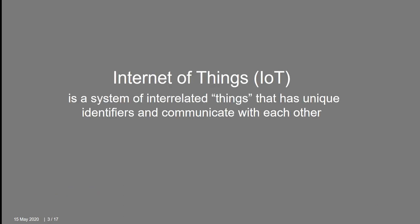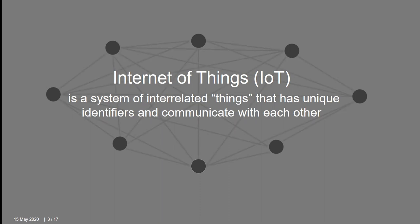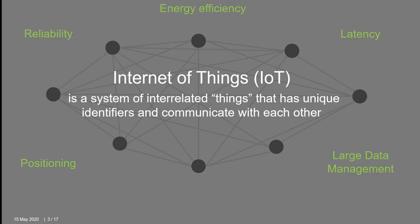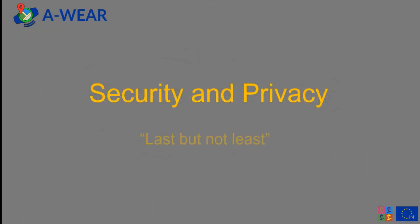Internet of Things is a system of interrelated things that has unique identifiers and communicates with each other. Things could be whatever, regardless of size or material — everything that has access to the Internet and a connectivity solution. This concept offers a lot of opportunities, but at the same time there are a lot of open questions in the field regarding positioning, reliability, energy efficiency, latency, large data management, and security and privacy, which usually come last but not least.